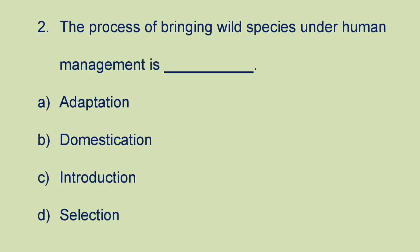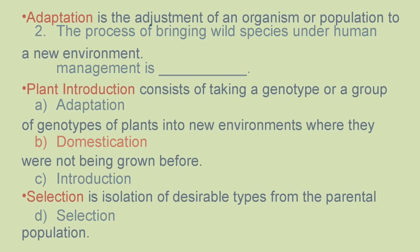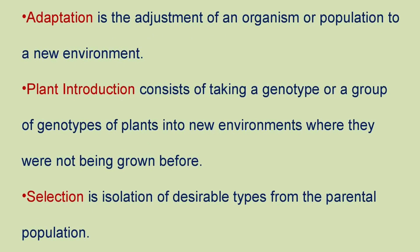Next question: the process of bringing wild species under human management is A) adaptation, B) domestication, C) introduction, or D) selection. The answer is domestication. Adaptation is the adjustment of an organism or population to a new environment. Plant introduction consists of taking a genotype or a group of genotypes of plants into new environments where they were not being grown before. Selection is isolation of desirable types from the parental population.